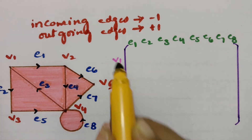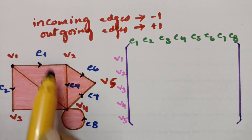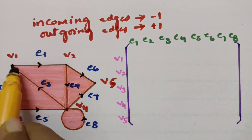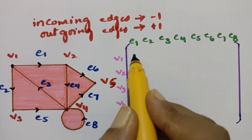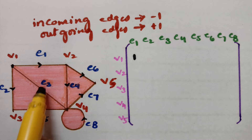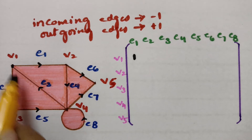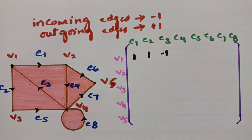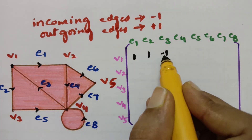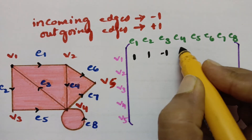Going with vertex v1, it has three edges: e1, e3, and e2. e1 is outgoing, so plus 1. e3 is inward, so minus 1. e2 is outgoing, so plus 1. These are the three edges connected with v1; remaining are all zeros across the 8 columns.